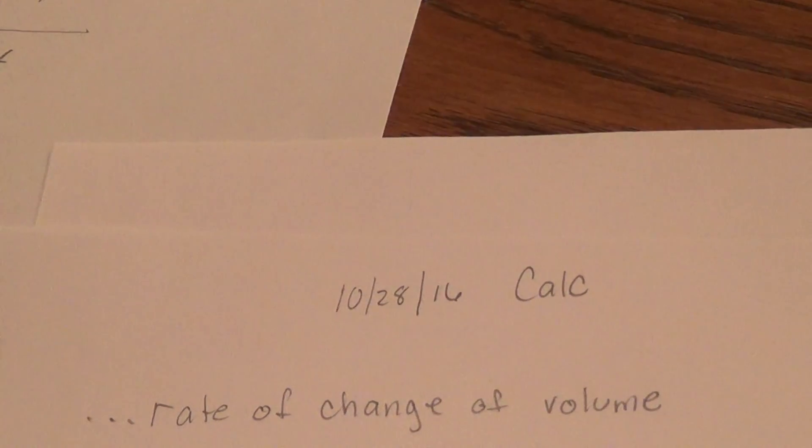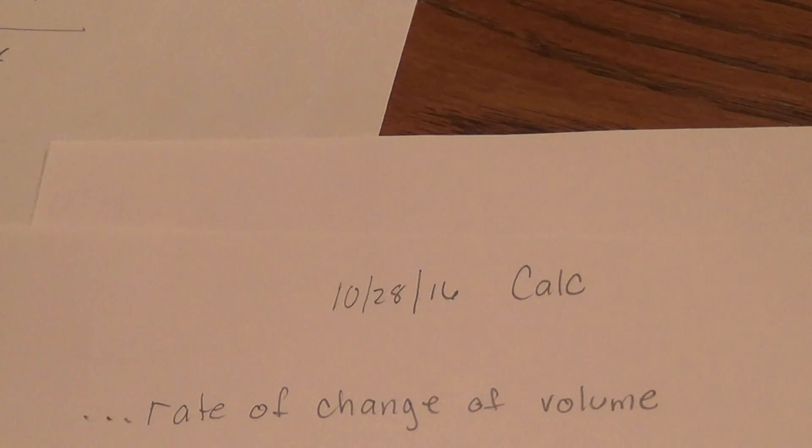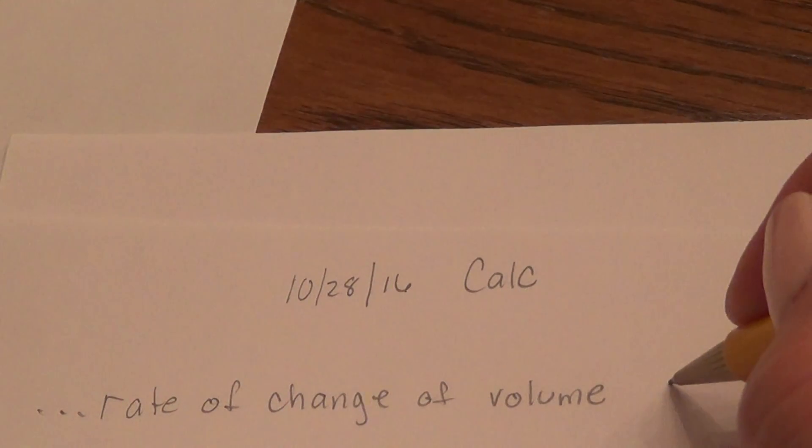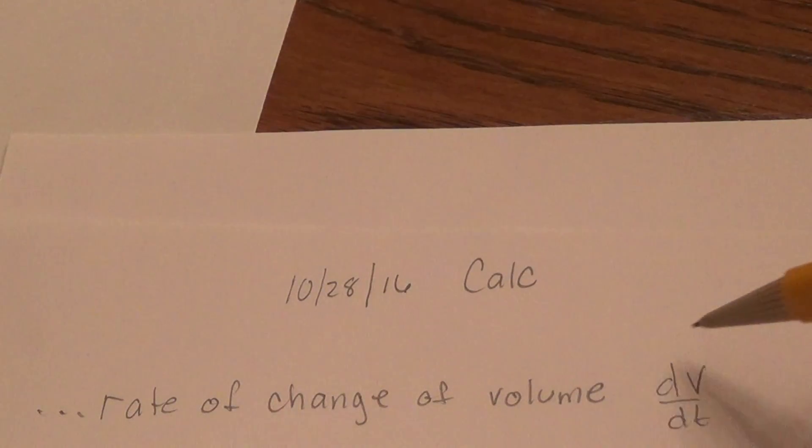All of our related rates are going to be derivatives with respect to time, so dt will always be on the denominator. So if you have a problem that has wording like rate of change of volume, then the derivative that that one is talking about is dV/dt, the change of volume with respect to time.